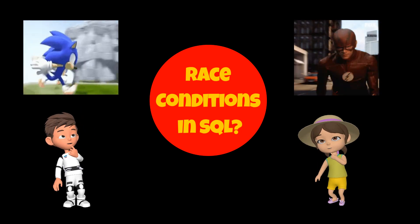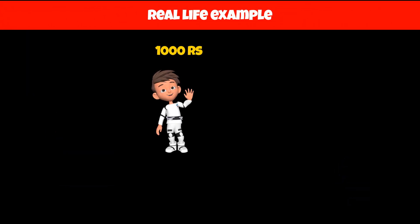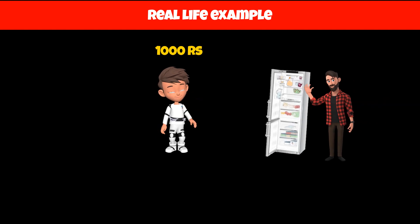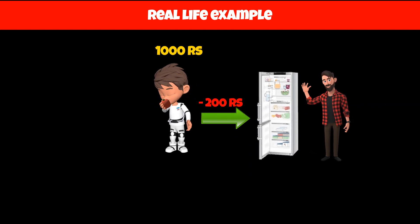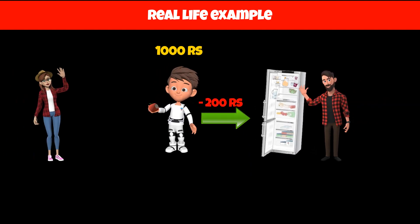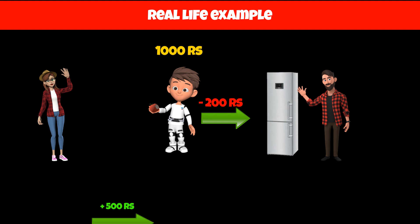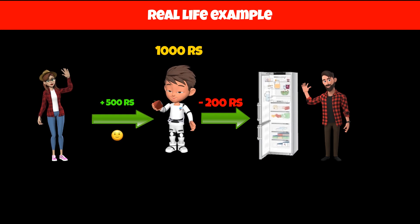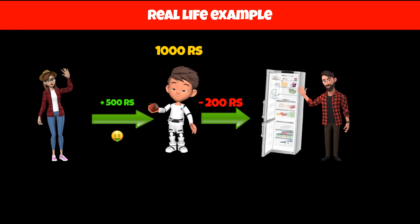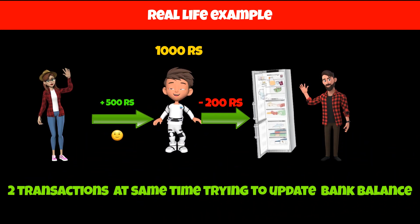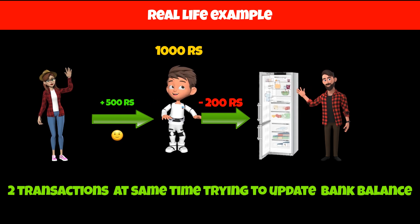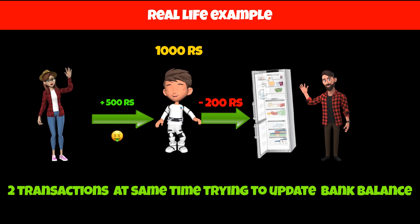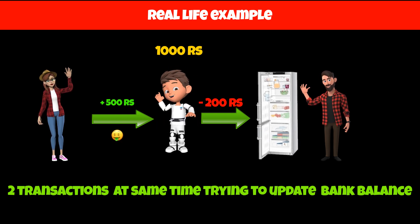What is race condition in SQL? Consider Ross has 1000 rupees in his bank account and he goes to shop for buying groceries where he makes the payment of 200 rupees. At the same time, Rachel transfers 500 rupees to Ross to settle their past business. These two transactions — Ross transferring money to the shop owner and Rachel transferring money to Ross — are happening at the same time, and both are trying to update Ross's bank balance.